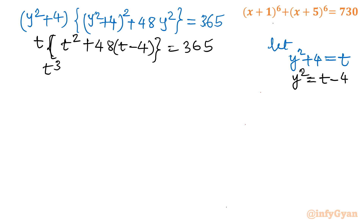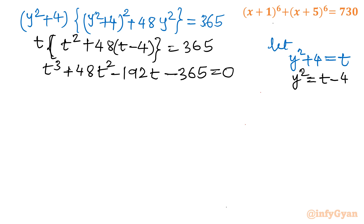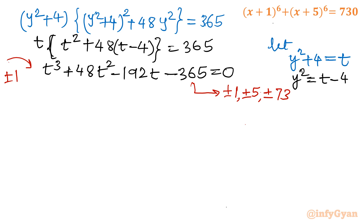Expanding: t³ + 48t² − 192t − 365 = 0. This is a cubic equation. Using the rational root theorem, the factors of 365 are ±1, ±5, and ±73. Since the leading coefficient is 1, these are our eligible rational roots.